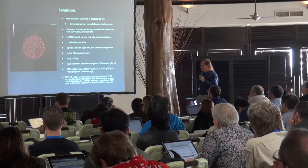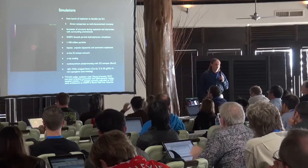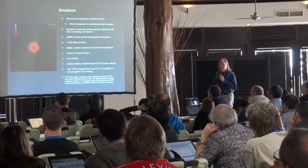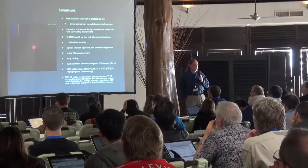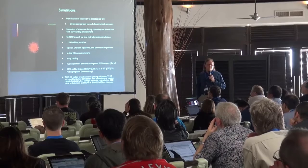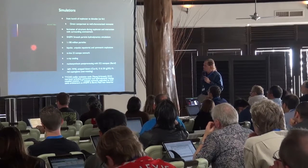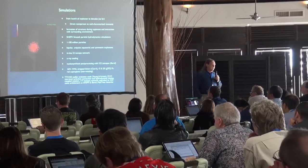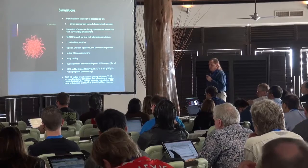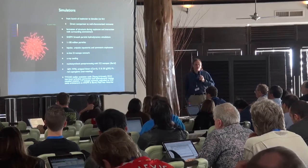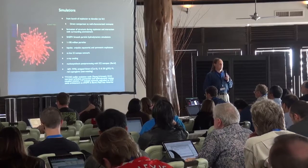The progenitors for today are a 16 solar mass stripped binary that explodes as it's transitioning to a WNL star to match the Cas A progenitor, and 15 to 20 solar mass red supergiant progenitors. Our tool for doing the progenitors is TYCO, which has a non-local turbulent convection and hydrodynamic mixing algorithm, which is essential to modeling massive stars with a large nuclear network.